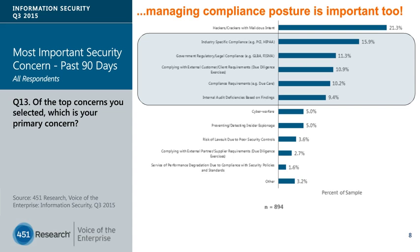This is recent data from our Voice of the Enterprise, Q3 2015. When we asked about top concerns, hackers and crackers are number one. But the next five tend to be compliance-oriented. If you think about it differently — it's detection. My best position to detect and respond to business needs. These aren't activities that are outward-bound looking for threats from a prevention angle. We're starting to see a shift back towards protecting the business — a very basic but very powerful shift.